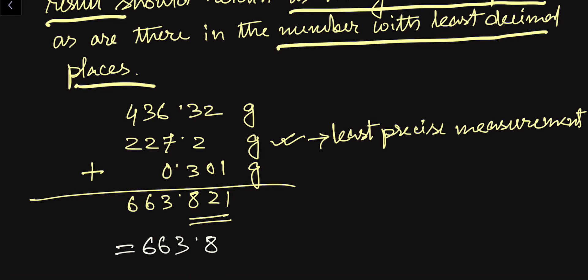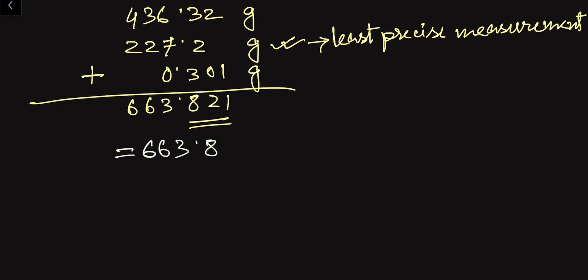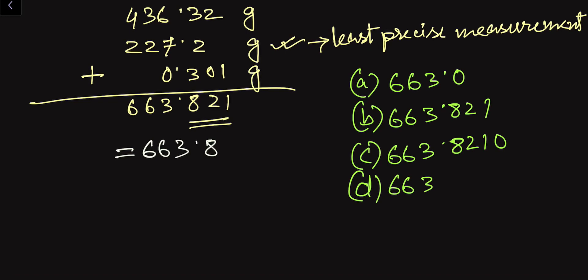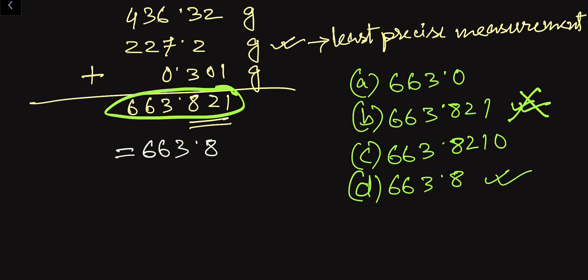In a competitive examination, the options might be: 663.0, 663.821, or 663.8. If you tick 663.821, that would be the wrong answer, because we can only have one digit after the decimal place. The correct answer is 663.8. That is how you must address these problems.